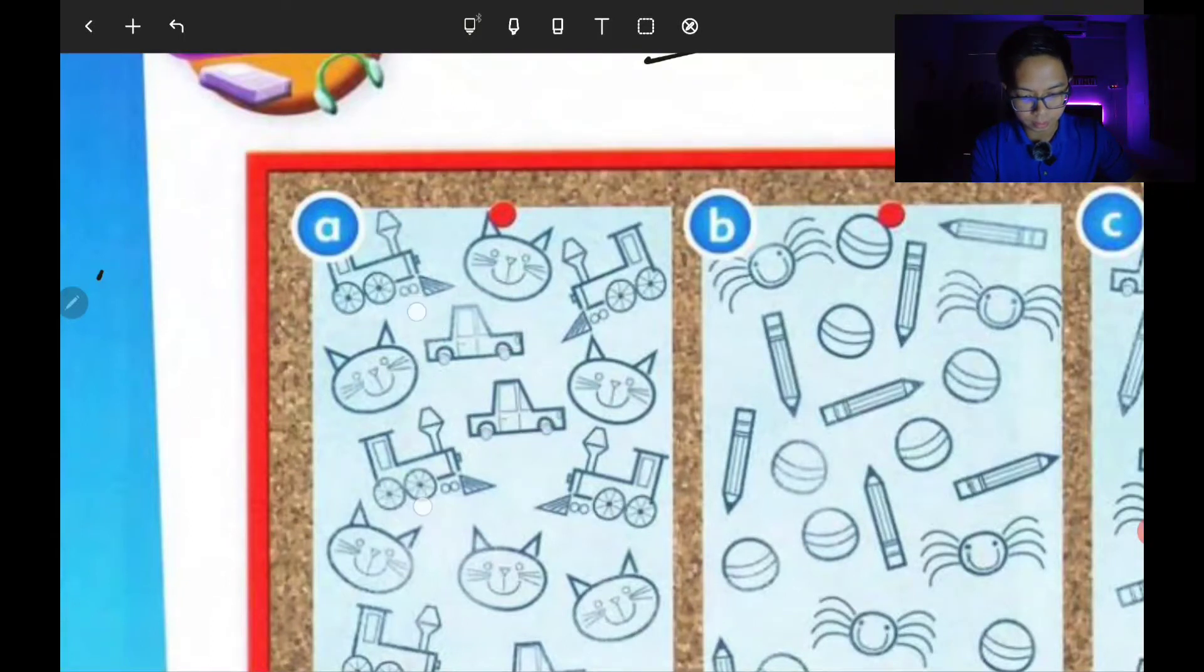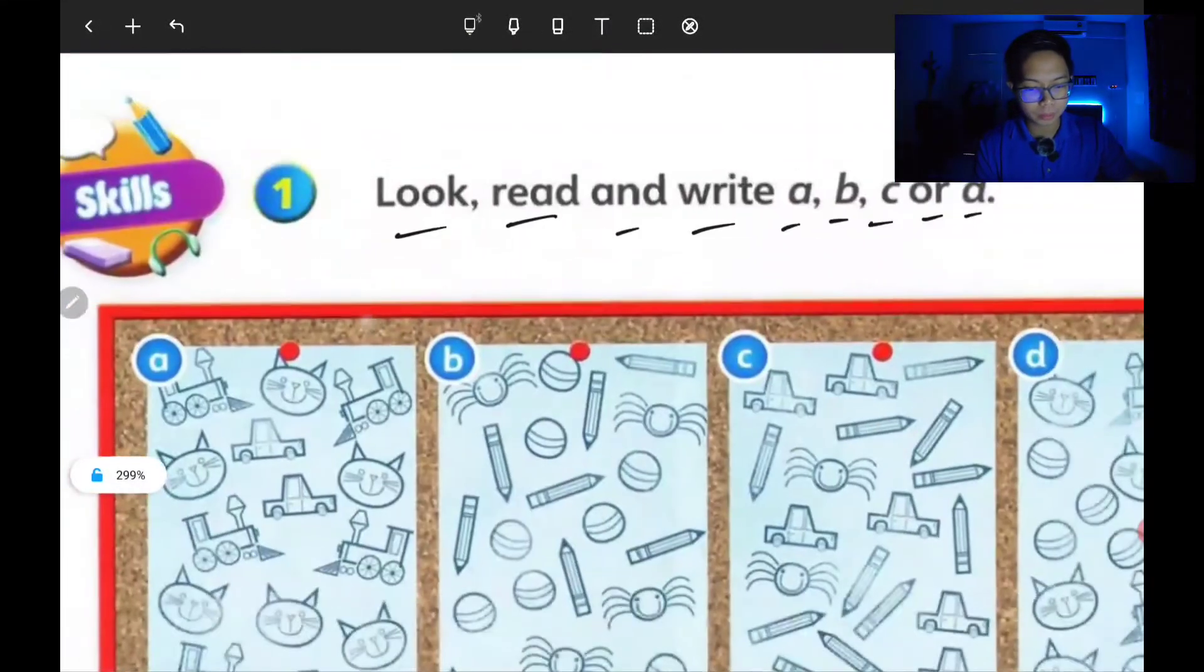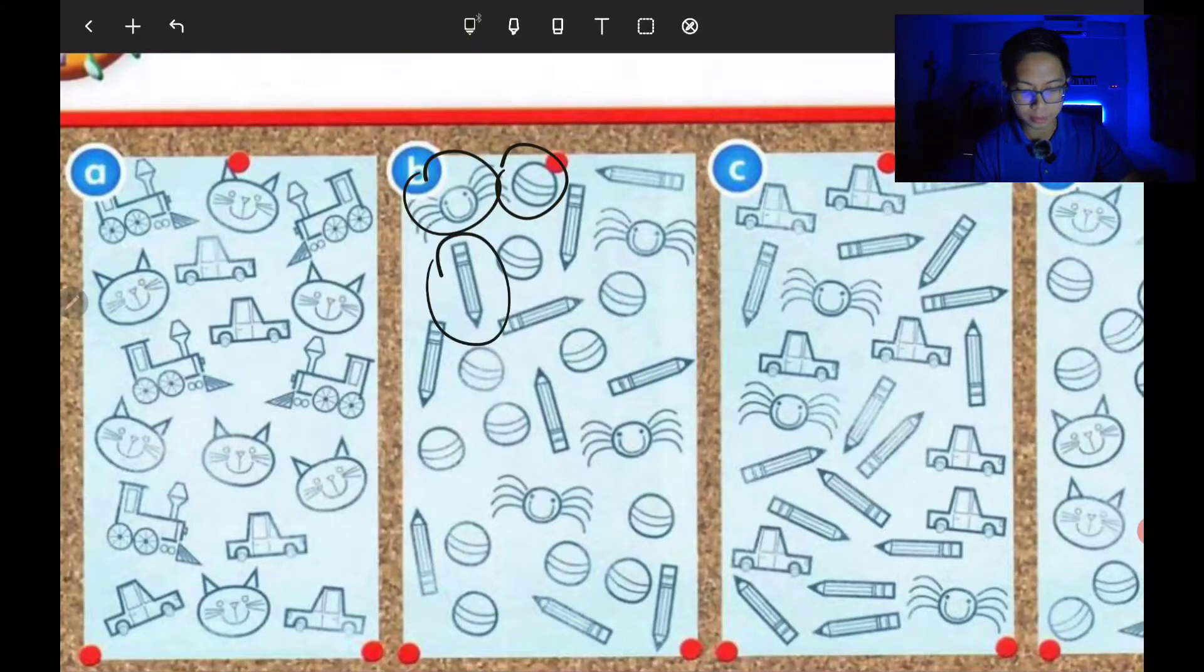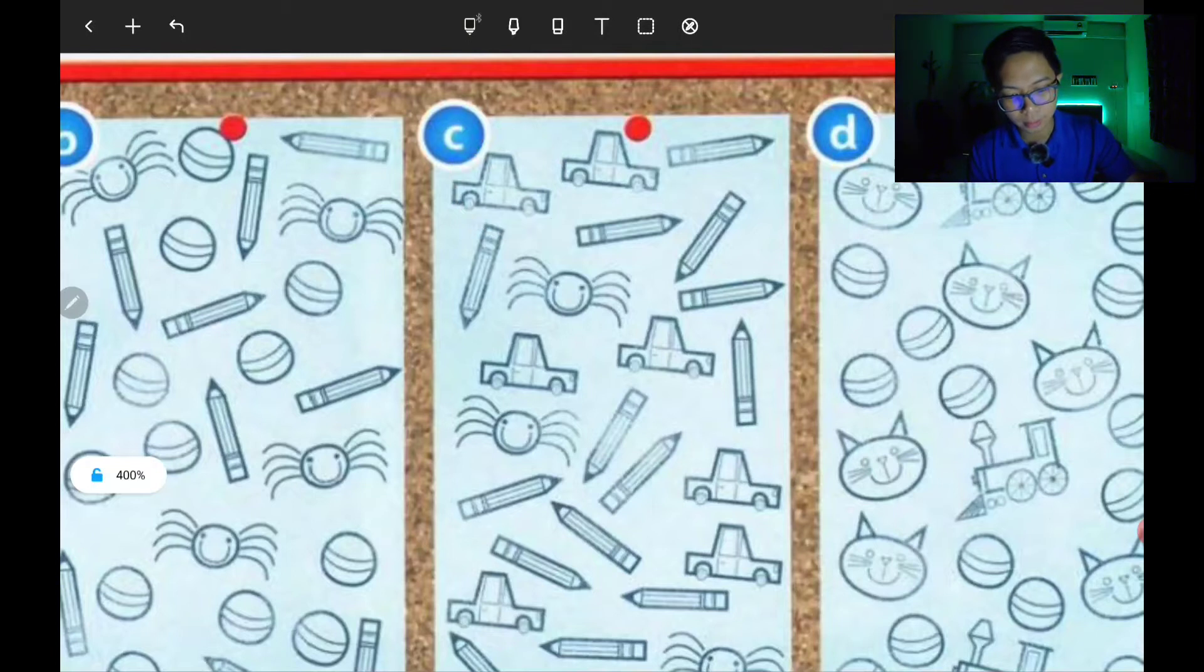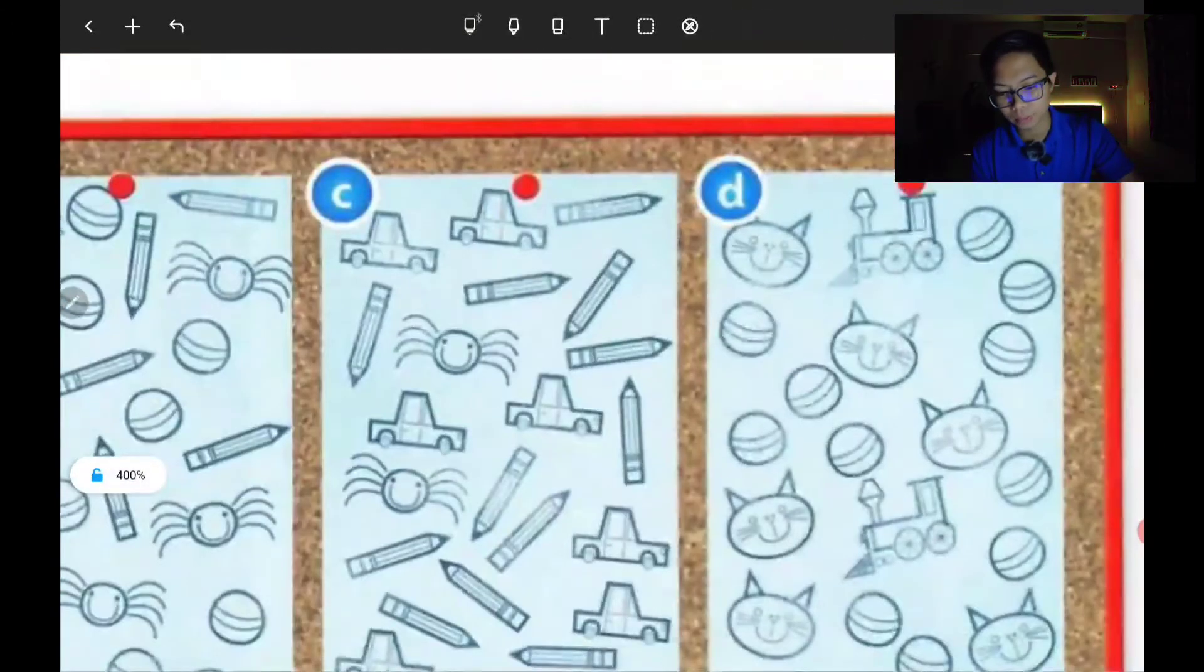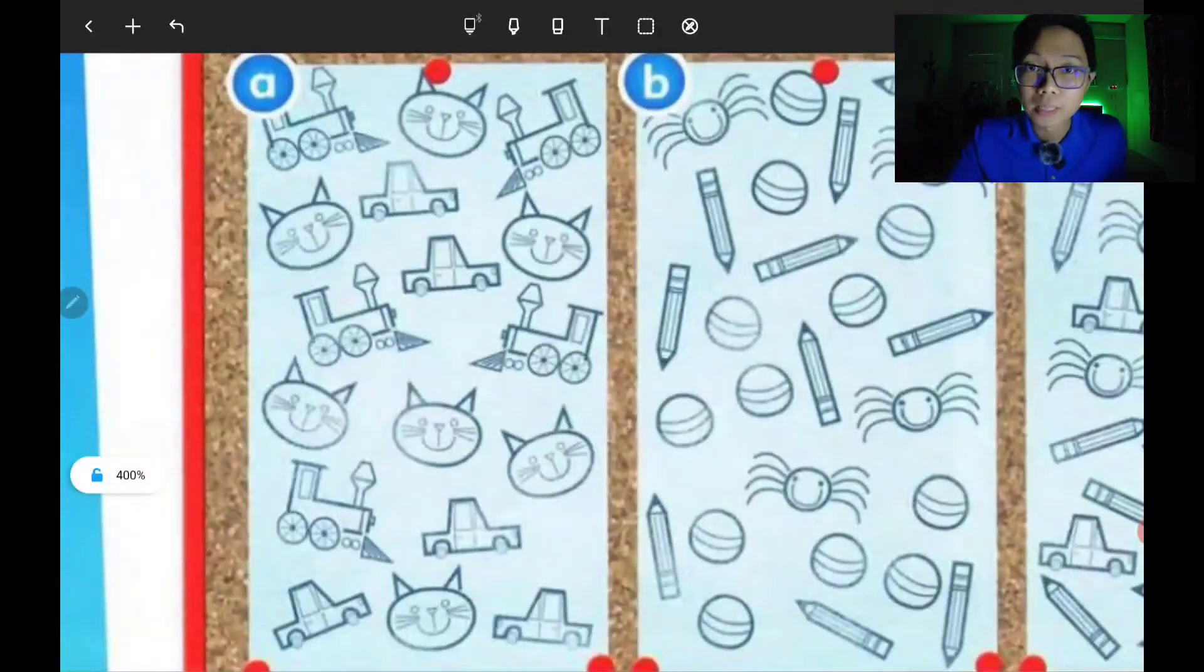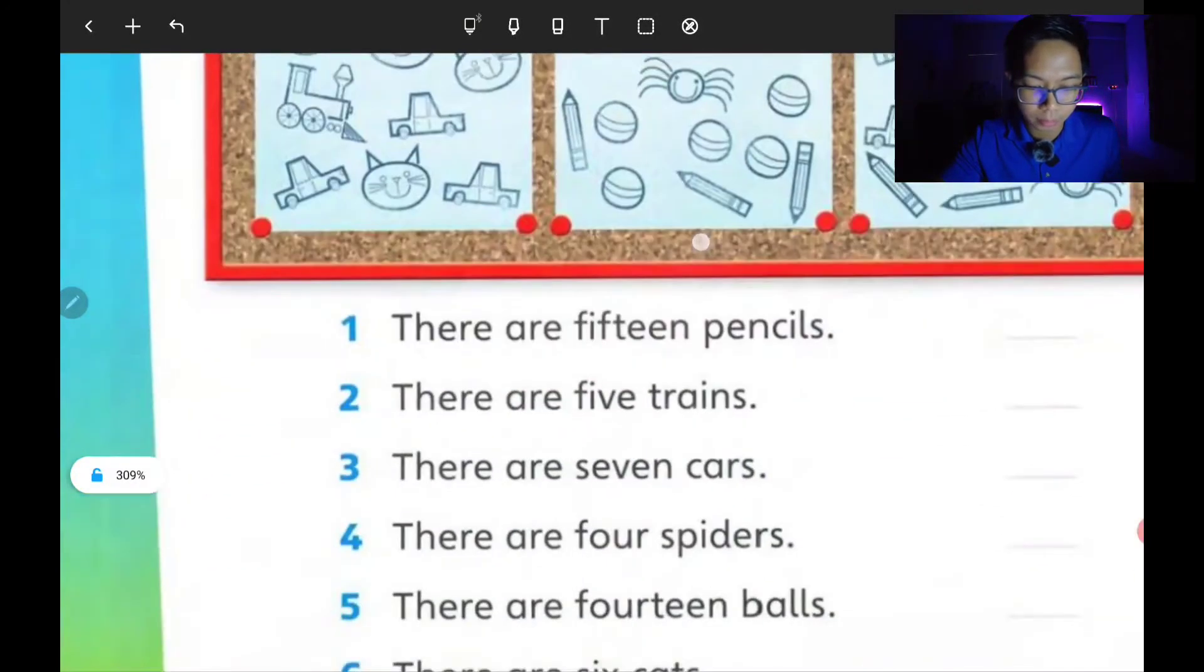Picture B - we have spiders, the balls that look like tennis balls, and pencils, lots of them. Picture C we have again cars, pencils, and spiders. Lastly, on picture D we have the cats, I think tennis balls, and the trains. Each picture has different amounts of items, so after we have looked through one by one, we have to read.